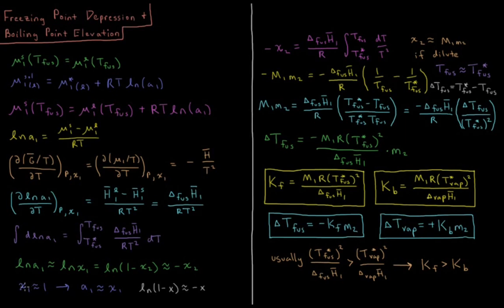As stated, the mole fraction of the solvent is approximately 1, and thus the activity of our solvent is approximately its mole fraction. The Taylor series of ln(1 − x) gives −x as the first term.